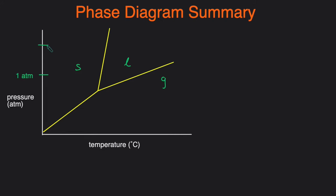For example, if you're asked about the phase at a particular pressure and temperature, you just trace it and get a dot. If that dot is in the solid region, that substance is a solid. Or if you're tracing a different pressure and temperature and you land in the gas region, then that compound will be a gas at that pressure and temperature.